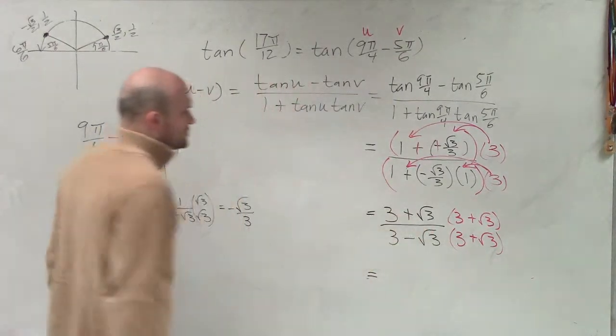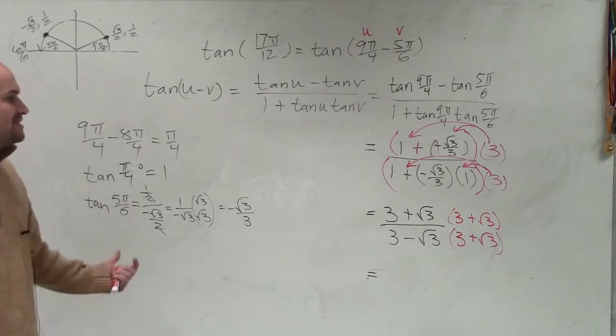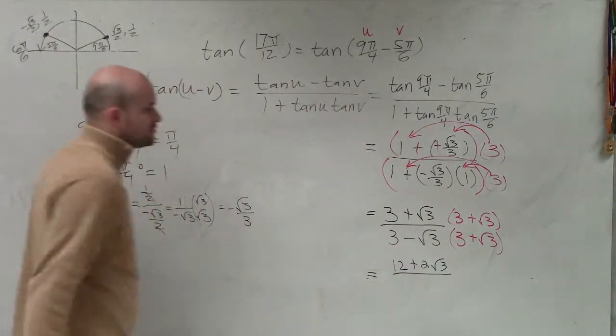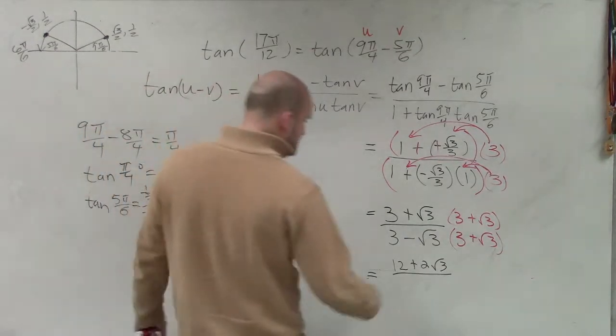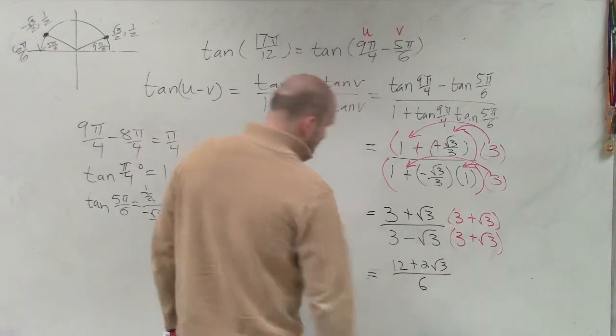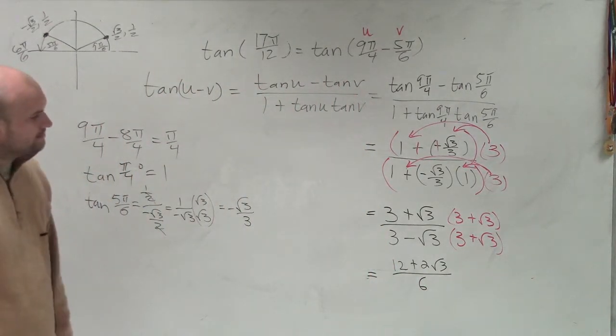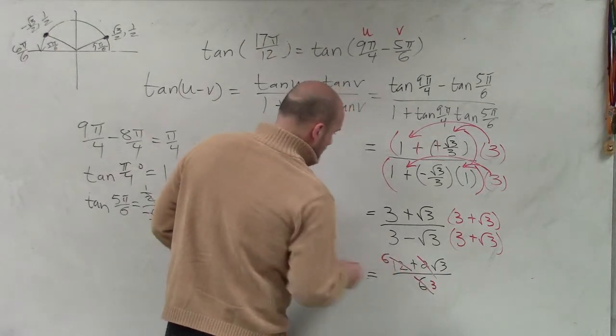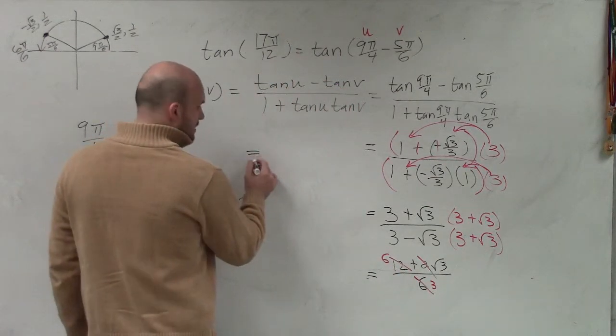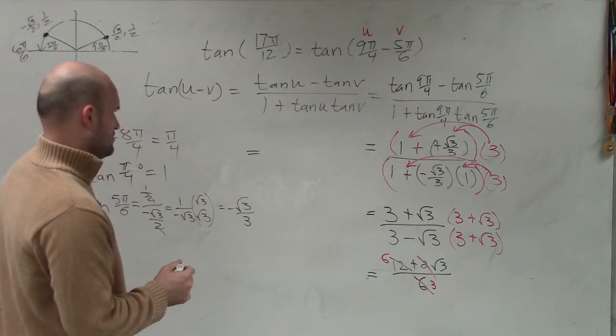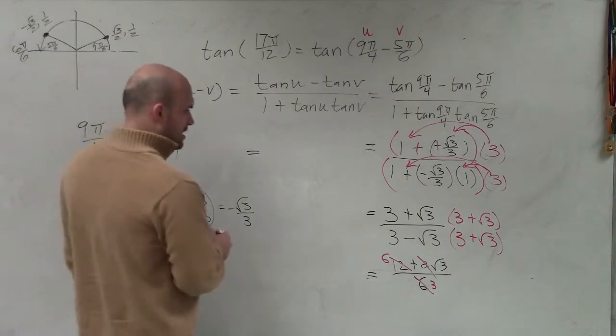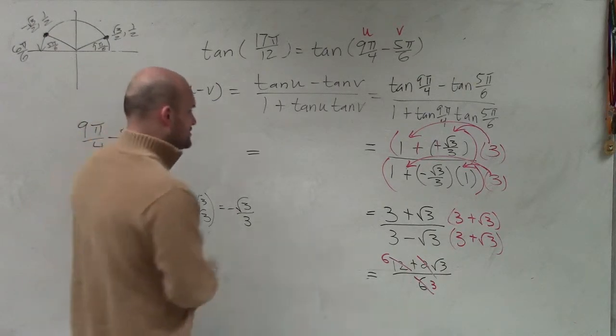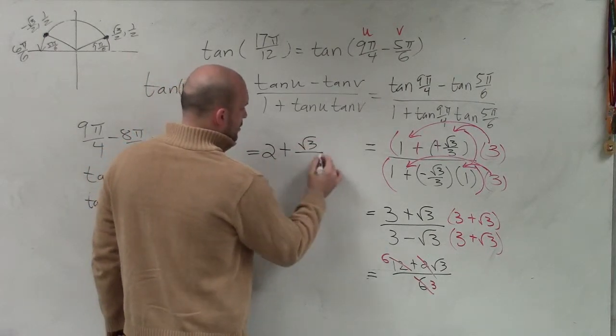Over here, what I'm going to have is that's going to be √3 times √3, which will be 3. 3 times 3 is 9. So that's going to be 12. So it's going to be 12 plus 2√3 divided by the difference of 2 squares, which would be 3 times 3 is 9 minus 3, which would be 6. So now what I can do is I can divide everything by 2. So then my final answer is going to be 2 plus √3 over 3.